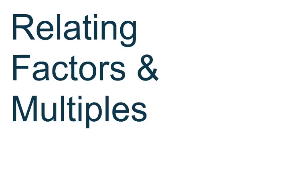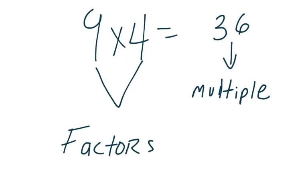So let's look at and review some quick vocabulary. The one thing that we know is that nine and four are factors that create a product of 36. And we know that 36 is a multiple of either four or nine, because it's a multiple of both.